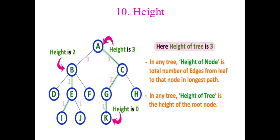Next is height. Height is calculated from the leaf up to the root. If you want to find the height of a particular node, go from the leaf to that node. For node C, the leaves are H and K. From H there is only one edge; from K there are two edges. Since you take the longest path, the height of C is two.